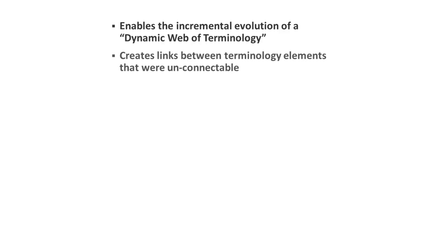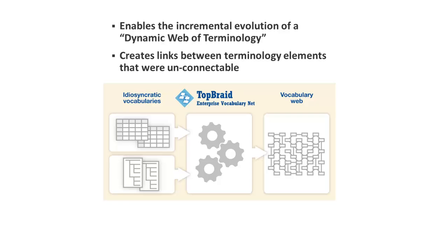If you're starting off with a disparate collection of vocabularies stored in spreadsheets and other formats, EVN lets you connect them into a dynamic web of terminology. You can specify any relationships you like between any terms, even when they're in different vocabularies on different servers. This allows you to start from a small pilot system and grow from there, or to start multiple separate pilots and connect them when you're ready.